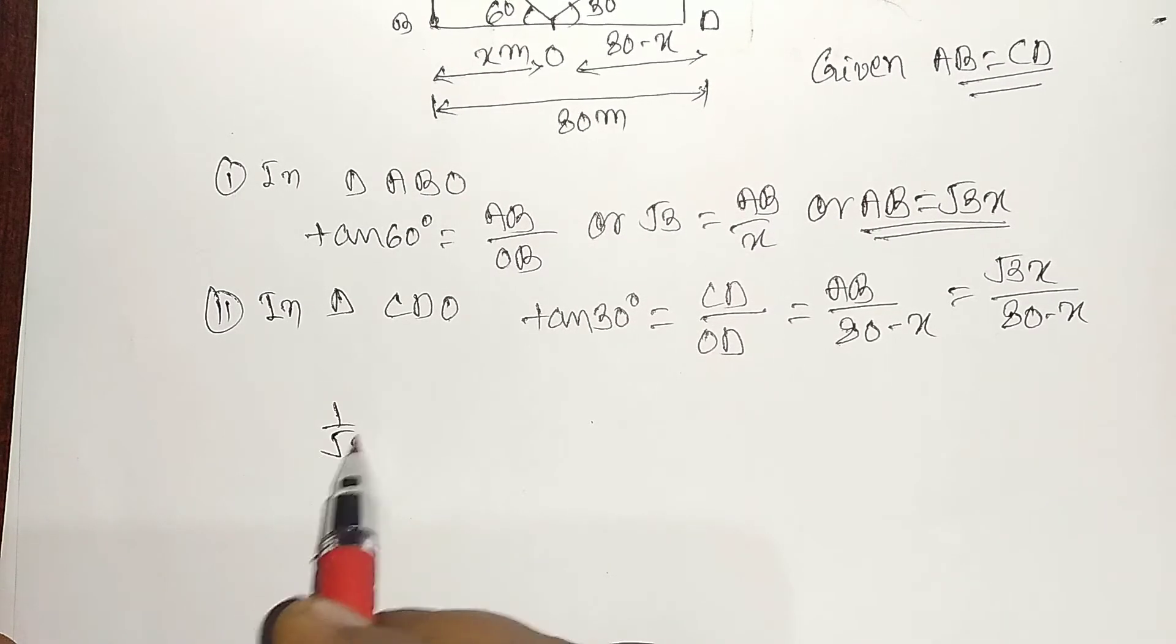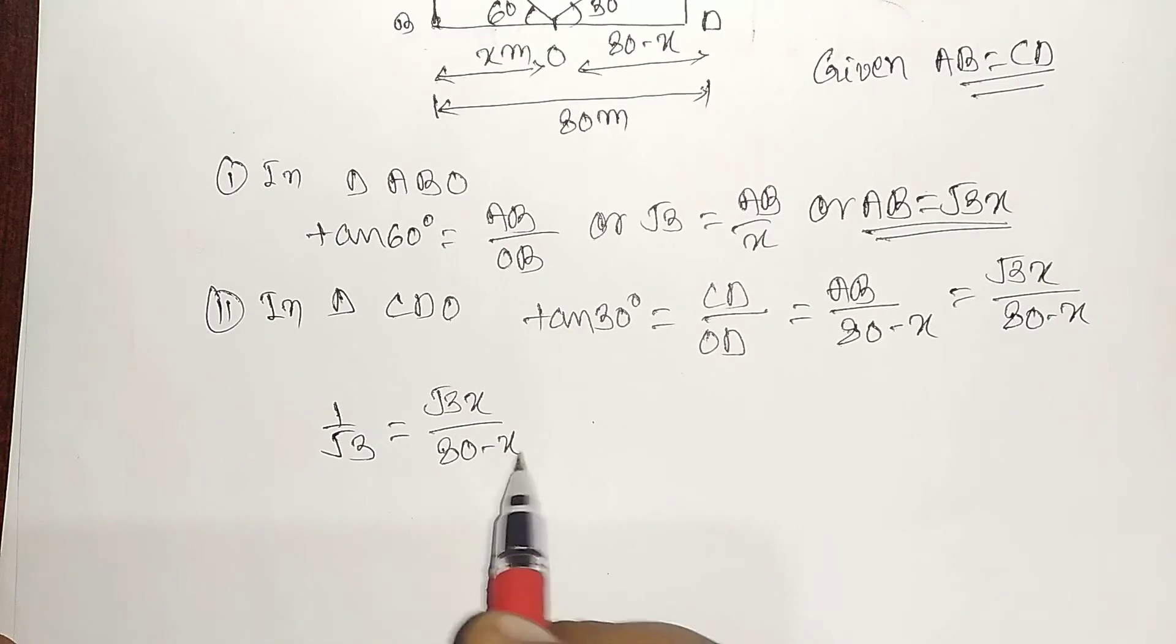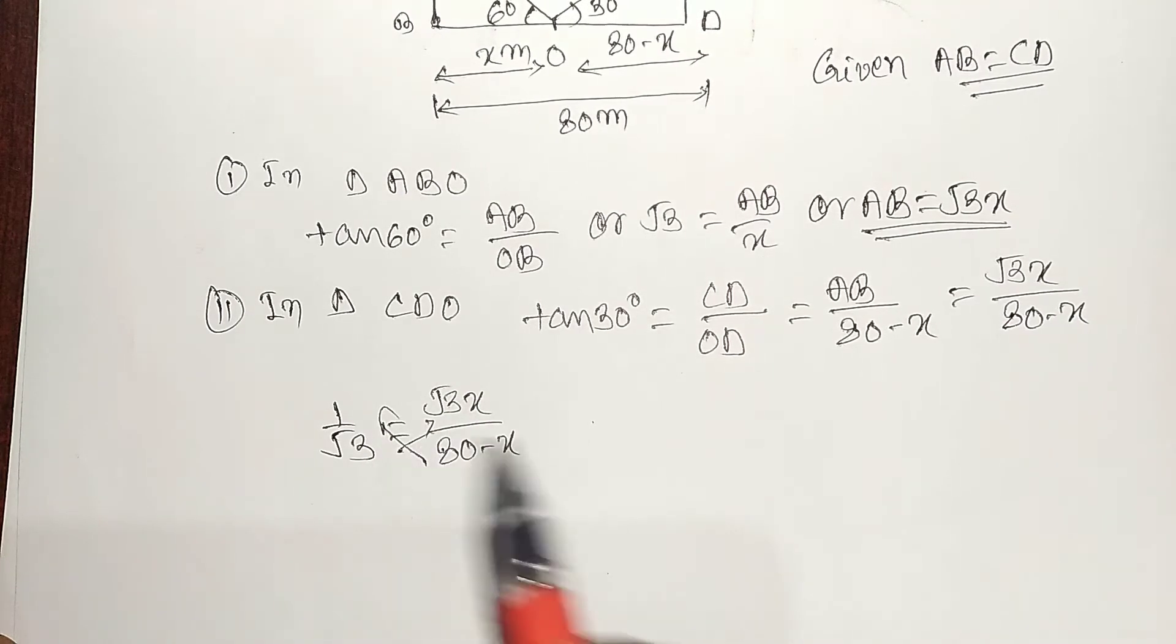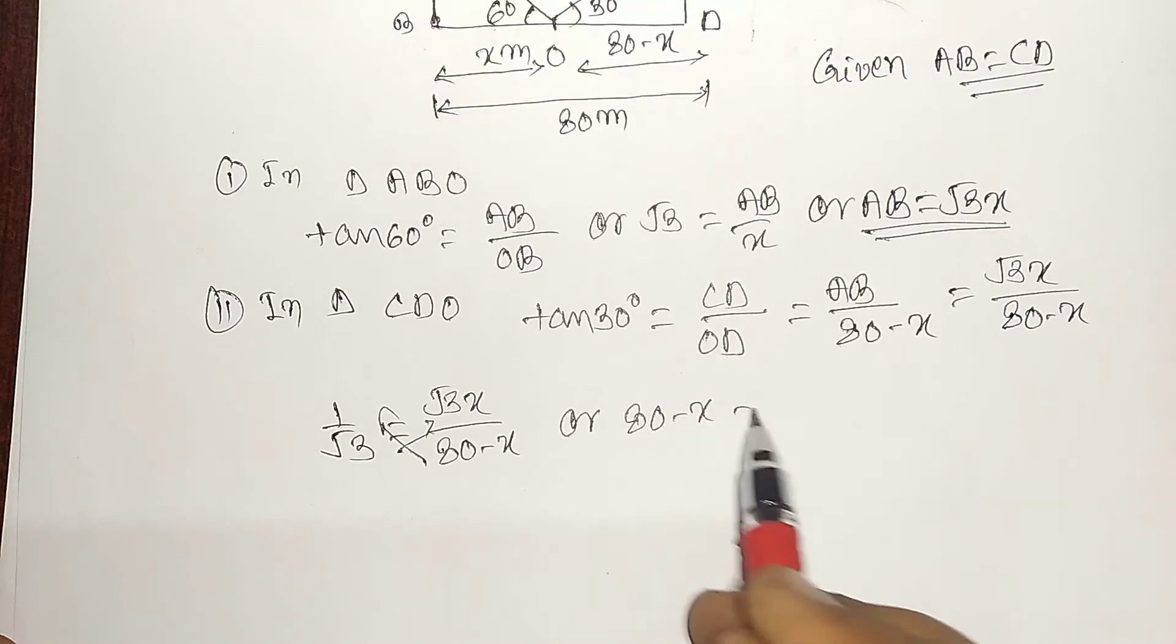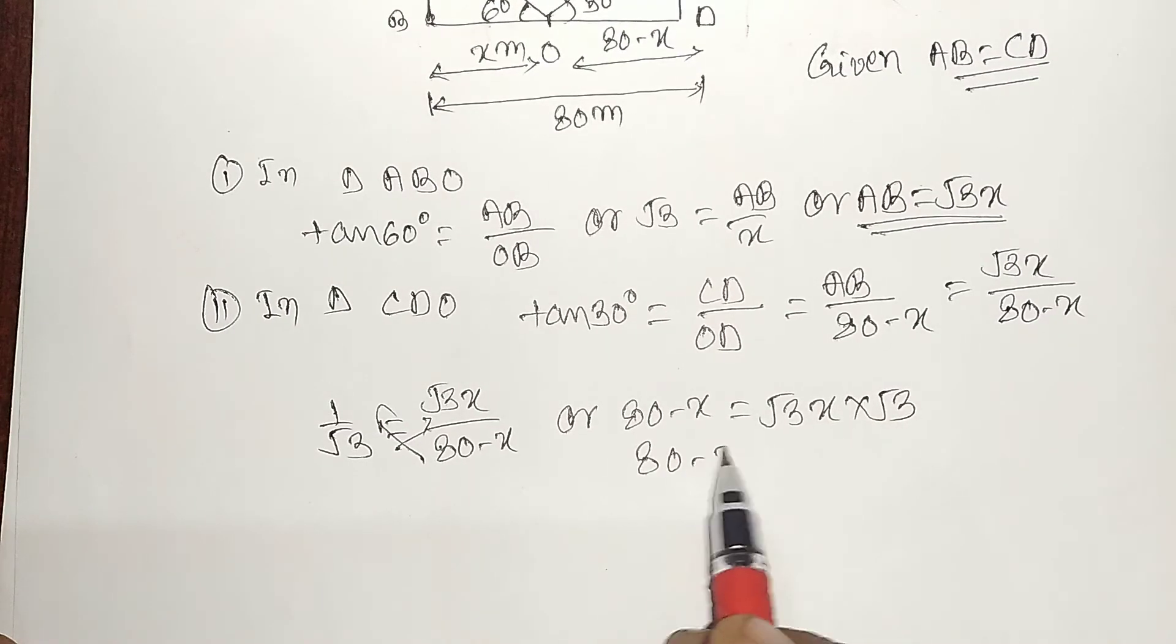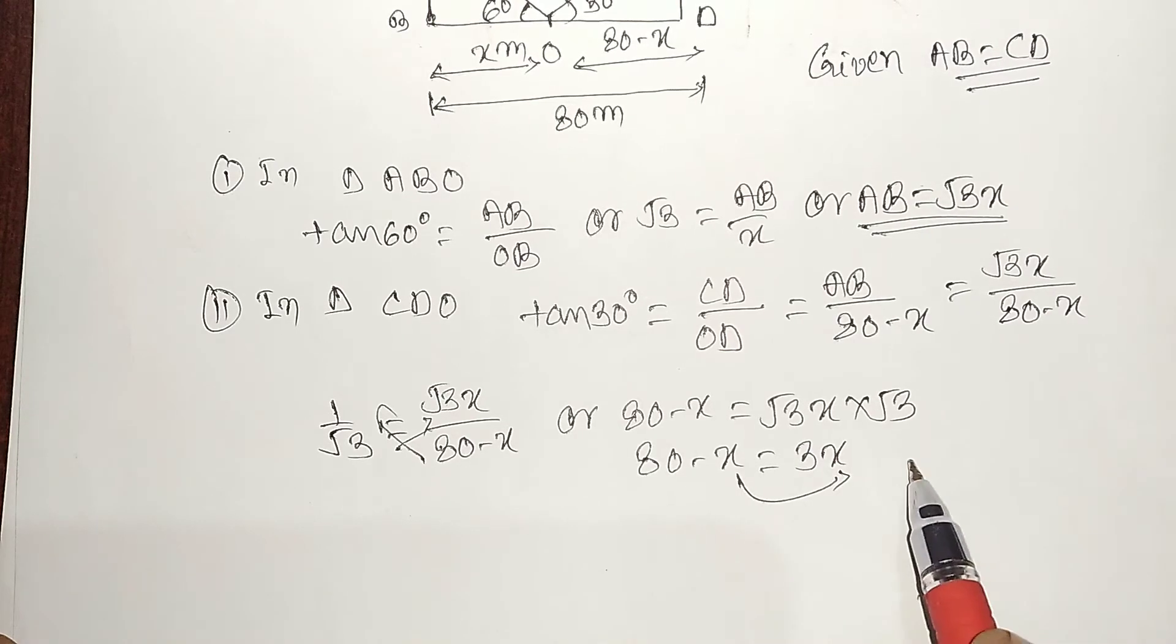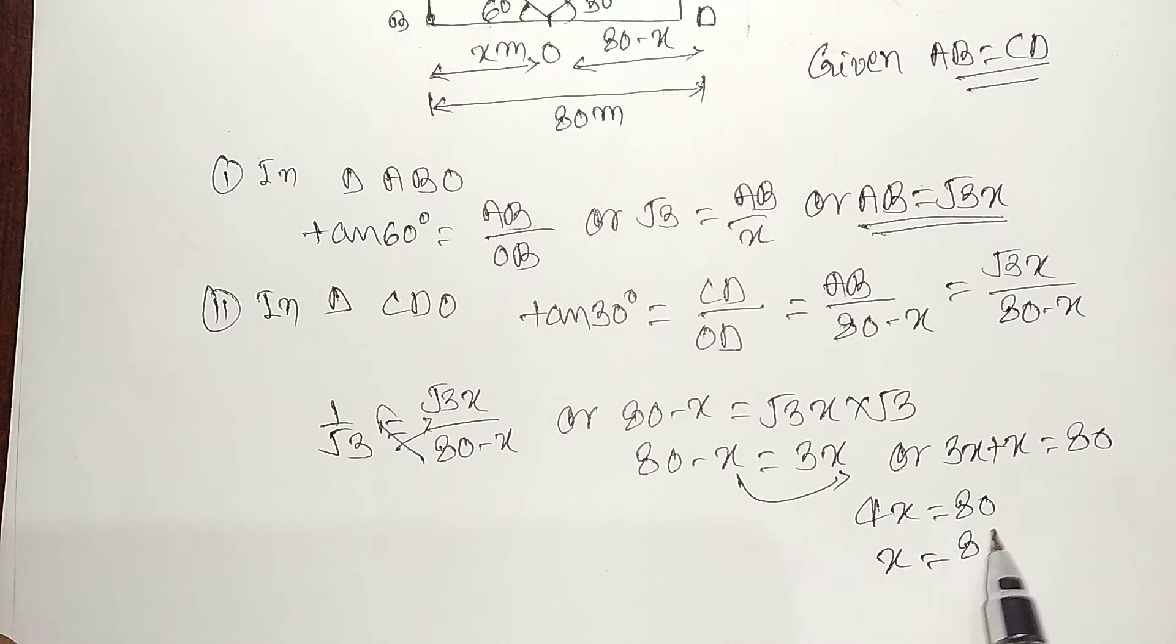1 upon under root 3, then 1 upon root 3 equal to root 3x divided by 80 minus x. Cross multiplication, 80 minus x equal to under root 3x into under root 3. Now 80 minus x equal to 3x. Transfer: 3x plus x equal to 80, 4x equal to 80, x equal to 80 by 4, which is 20.